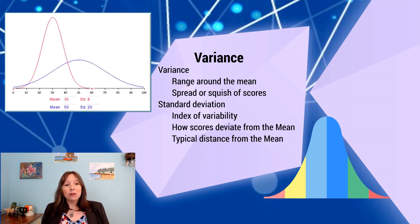And one of the ways we look at variance is a standardized index of variance. And that is called the standard deviation. So standard deviation is a way that we measure how much is the average spread. And so how do scores deviate from the mean?